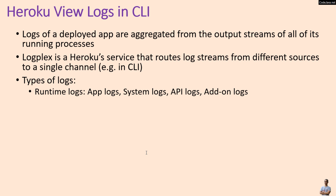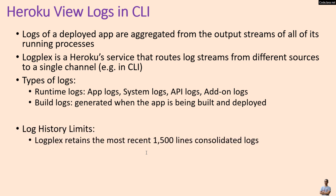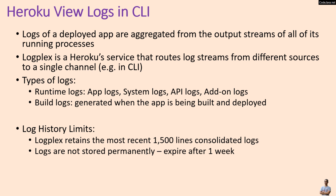Runtime logs include app logs, system logs, API logs, and add-on logs. There are also build logs generated when the app is being built and deployed. By default, logplex retains the most recent 1500 lines of consolidated logs, and logs expire after one week, so you should use a log add-on for persistent logs.